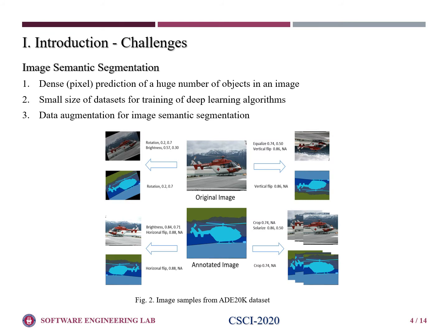There are three main challenges for image semantic segmentation. First, dense pixel prediction of a huge number of objects in an image — since semantic segmentation refers to pixel-wise classification, there are a lot of classes inside one image, and that is very challenging. Second, small size of datasets for training deep learning algorithms. And third, data augmentation for semantic segmentation — there is available data augmentation for image classification, but less data augmentation strategy for image semantic segmentation.